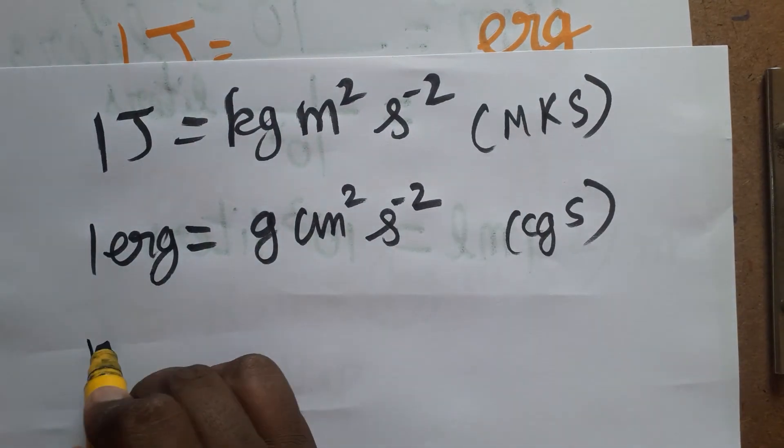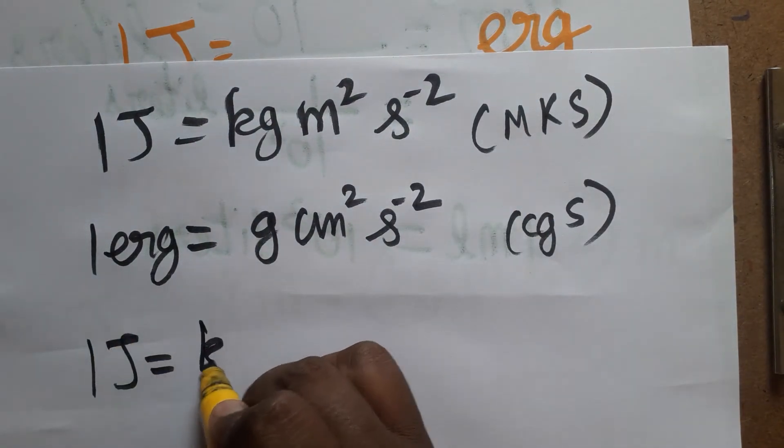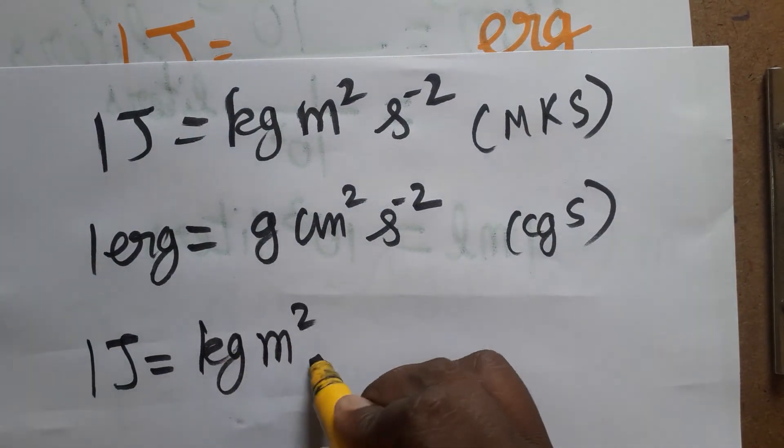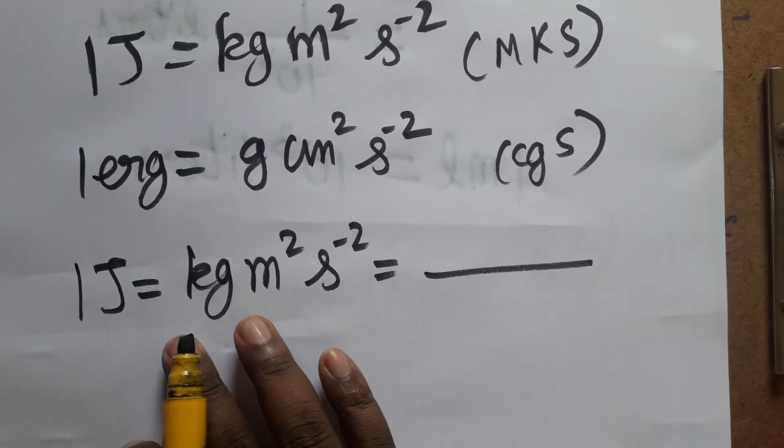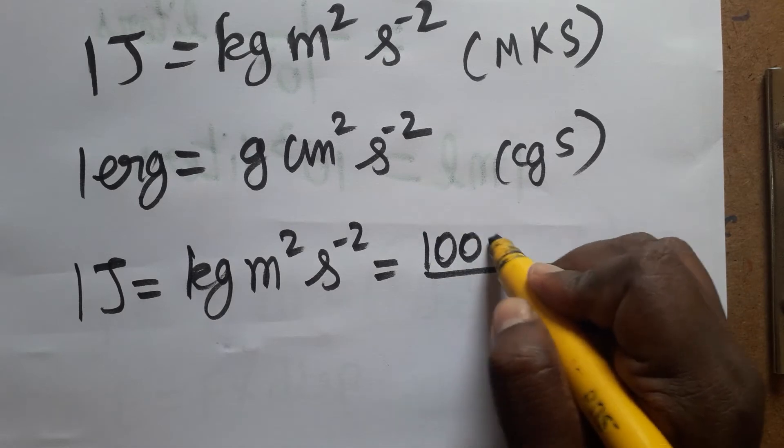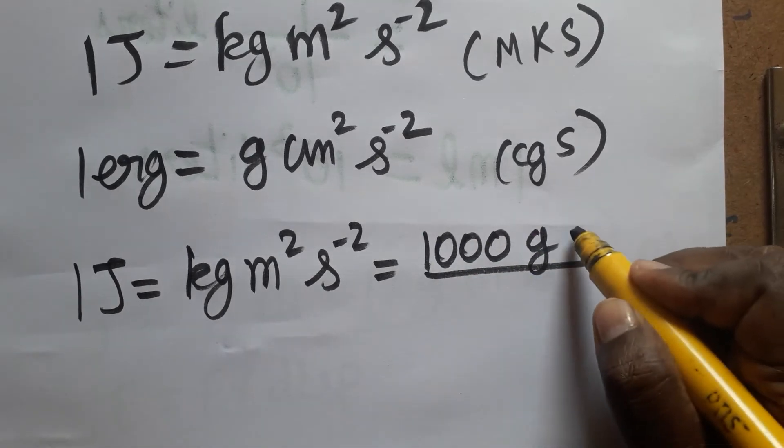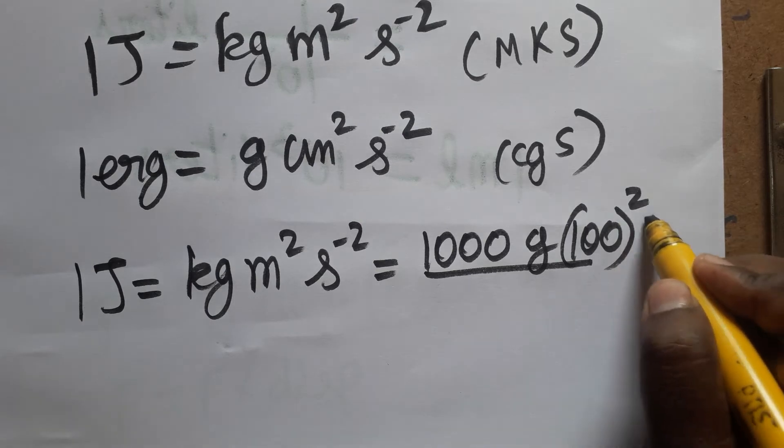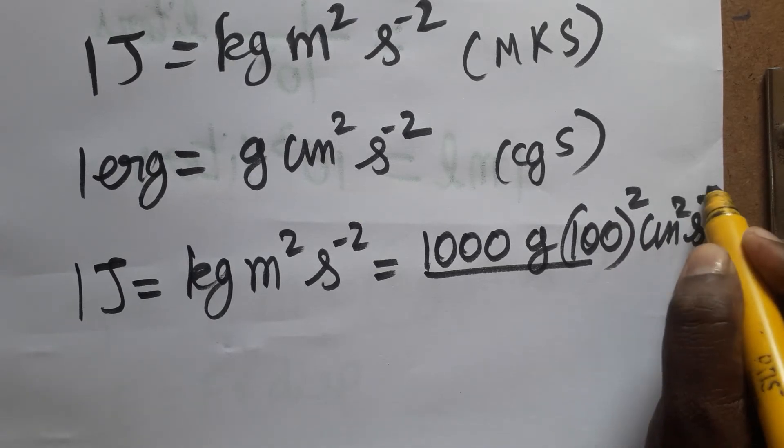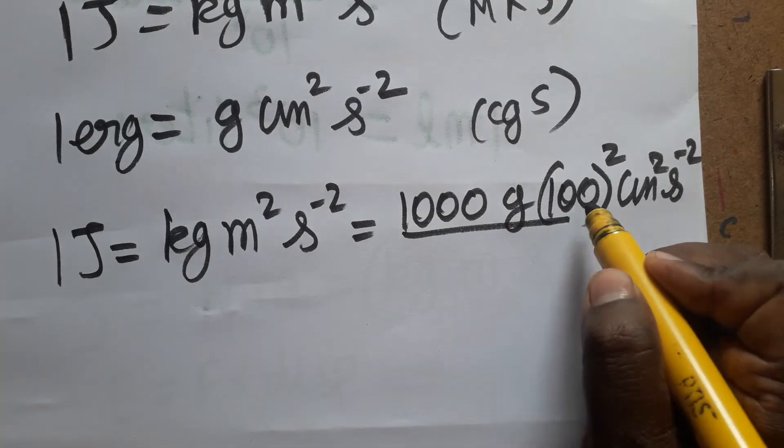Now we are going to convert from Joule to erg. 1 Joule is kg meter square second minus 2. This we are going to convert as erg. 1 kilogram is 1000 gram, 1 meter is 100 centimeter. Here it is meter square, so 100 square centimeter square second minus 2.